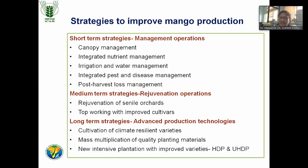From the nursery stage itself, we need to go for integrated pest and disease management strategies that include organic and inorganic application in a combined way. Especially in mango, stem borer problem is a major issue. Another important thing is phytosanitation — the orchard should be maintained very neatly so that we can save the production. And the final strategy is post-harvest loss management. India is the second largest country in production of fruits and vegetables, but there is up to 30 to 40 percent post-harvest loss. We need to manage post-harvest loss to improve overall mango production.